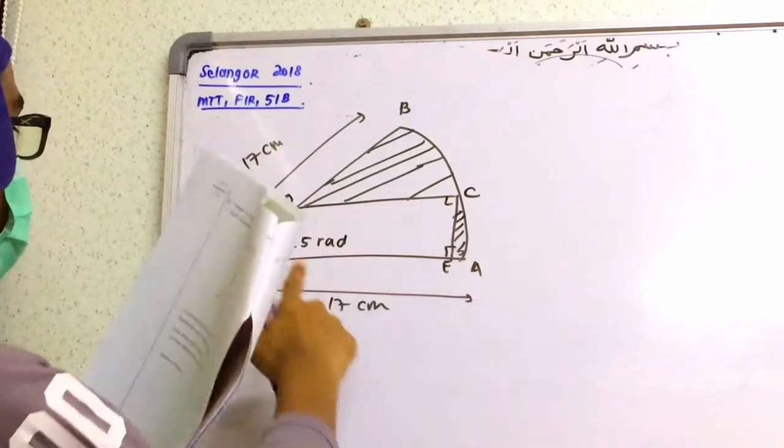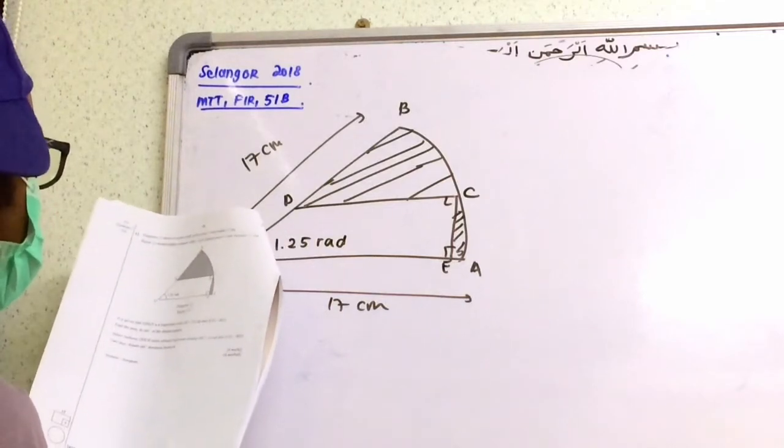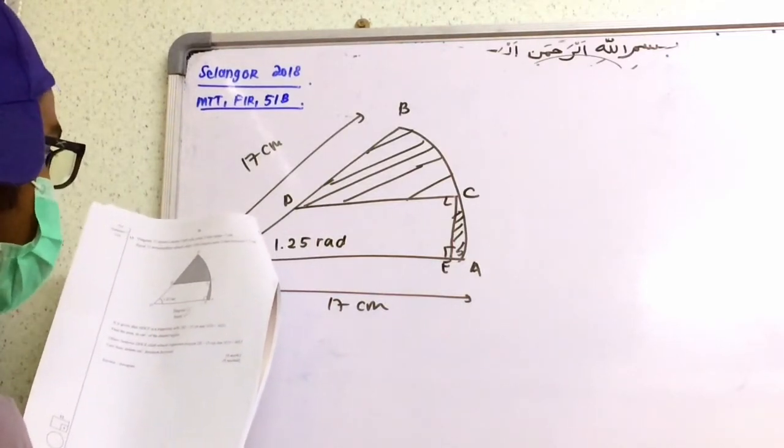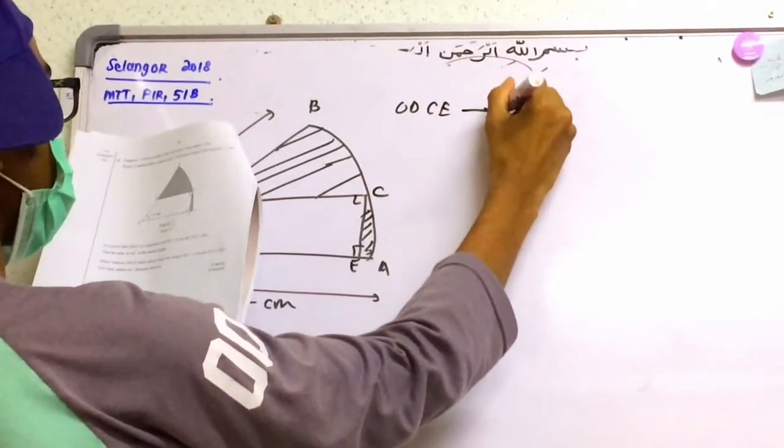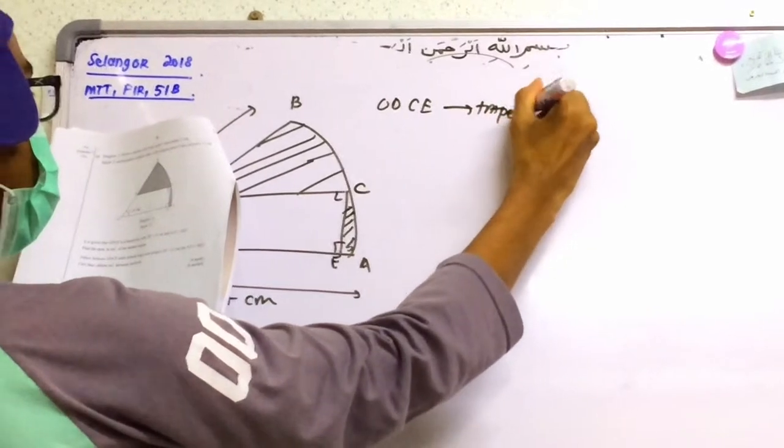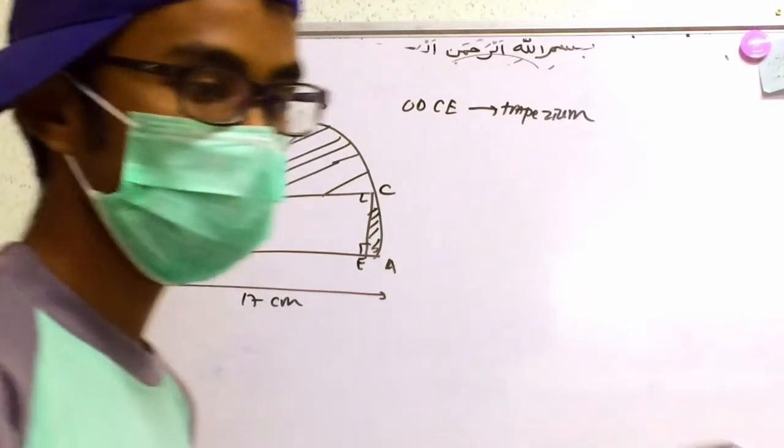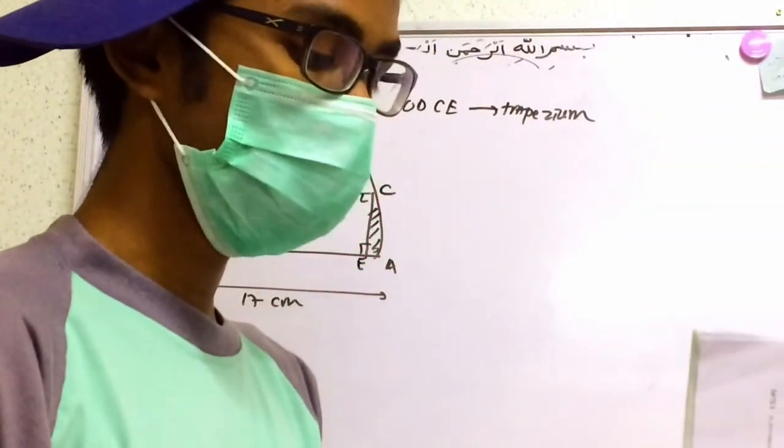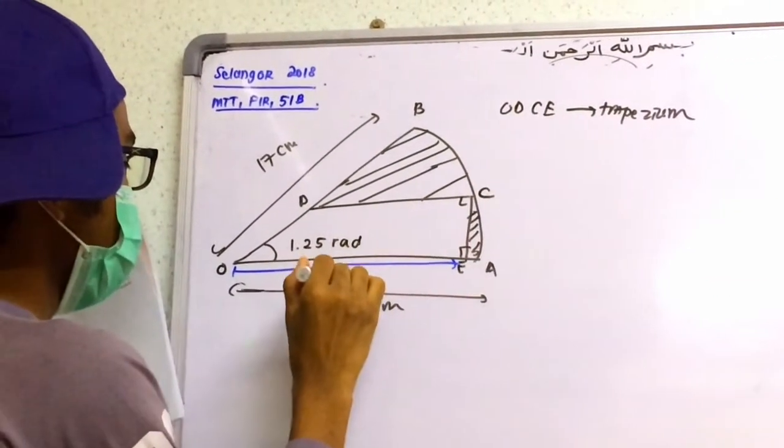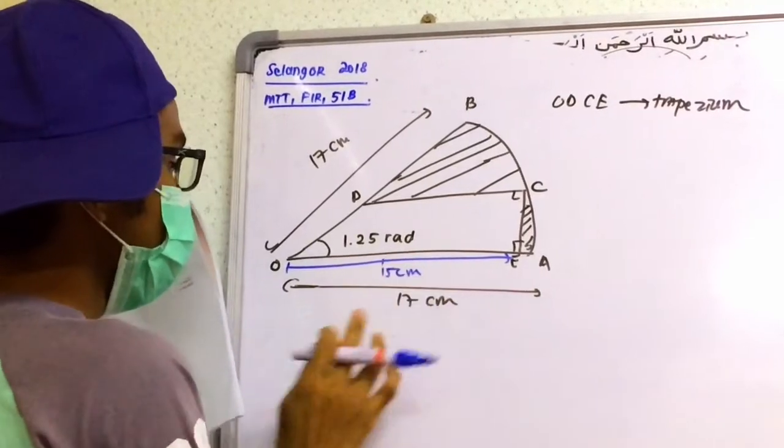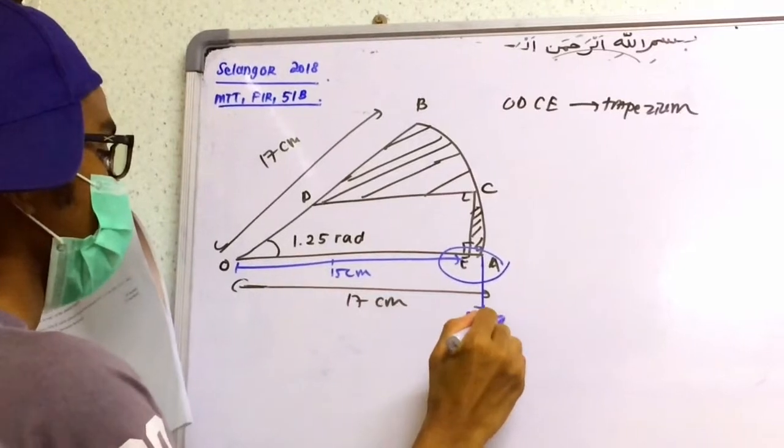Next, we have 1.25, this is in radians, the angle theta. It's given that O, D, C, E is a trapezium. If OE is equal to 15 cm, we mark OE as 15 cm. Earlier was 17, now 15, so the balance here is 2 cm.